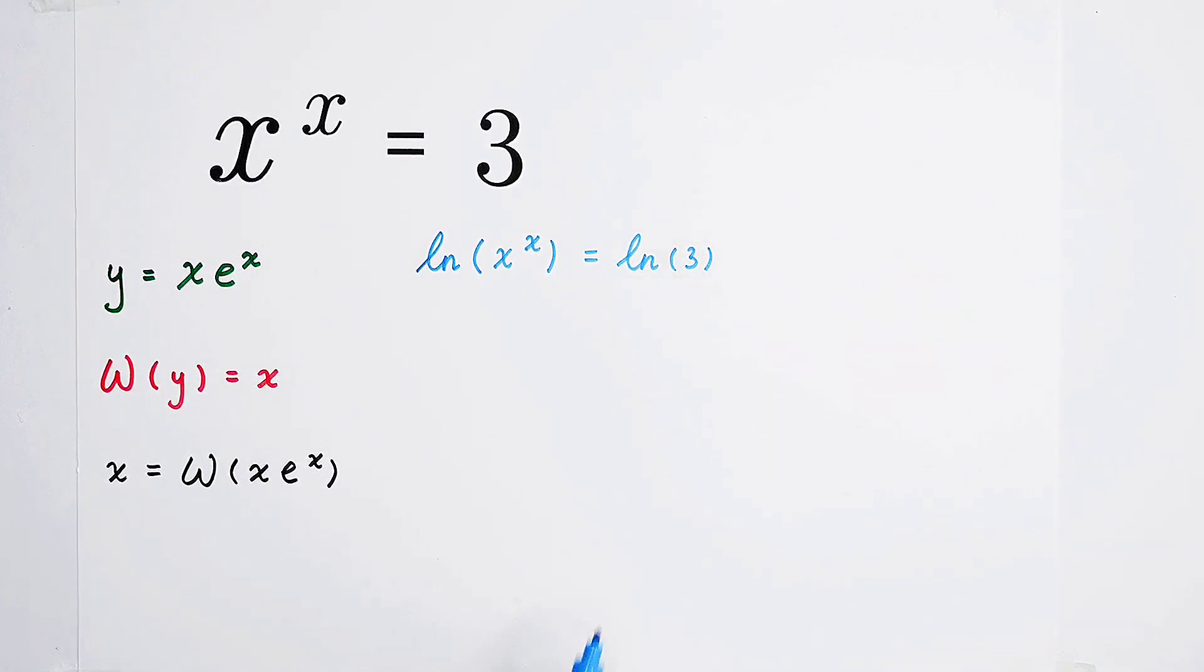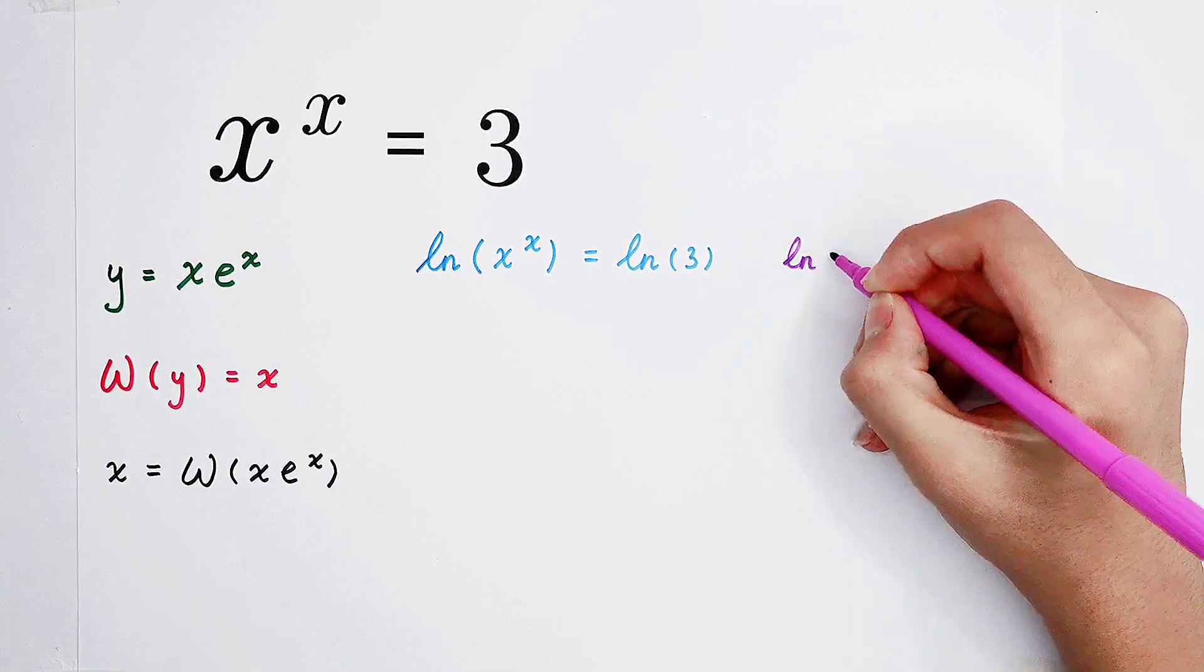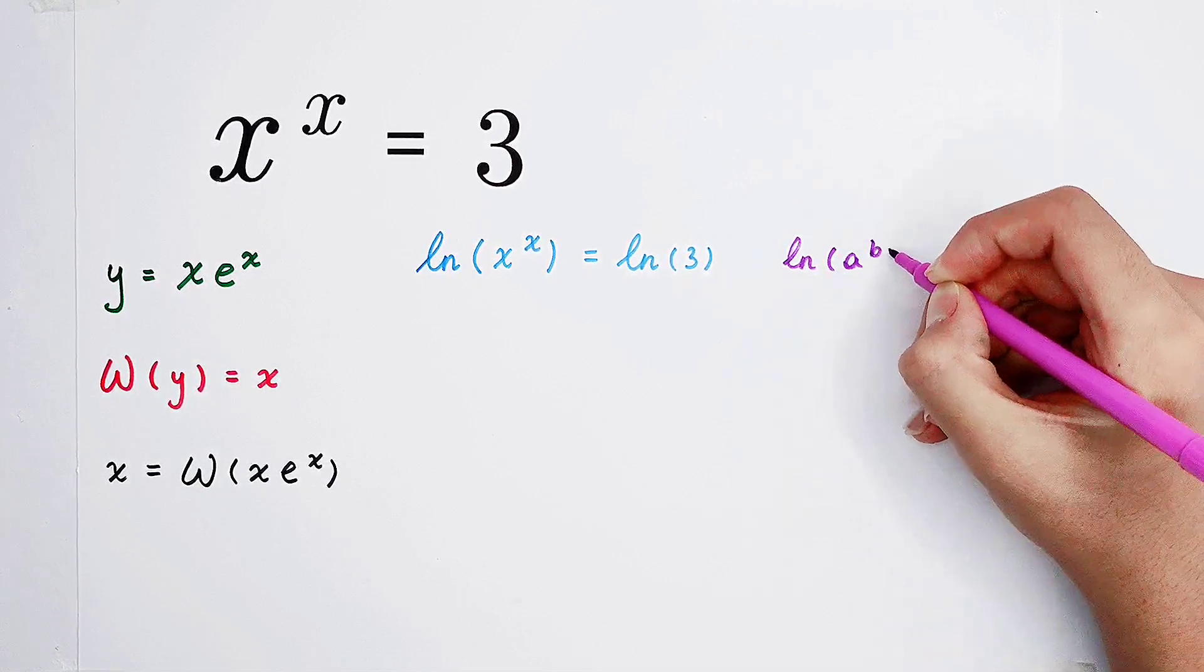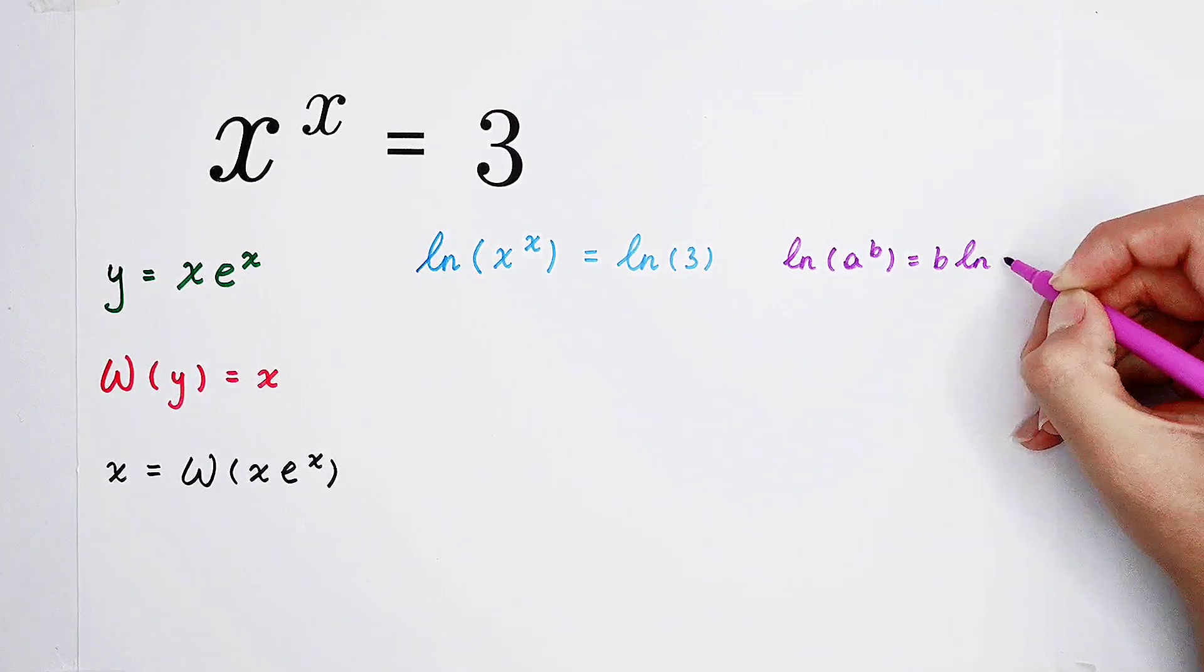Very good. But then, I'm going to write here, because the natural log of a to the power of b equals b times the natural log of a.